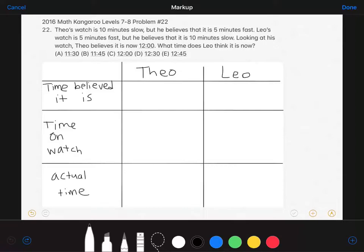As stated in the problem, Theo believes it is 12 o'clock. Because he thinks his watch is 5 minutes fast, the time appearing on his watch is 12:05. His watch is 10 minutes slow, so if the time appears as 12:05 on Theo's watch, the actual time is 12:15.